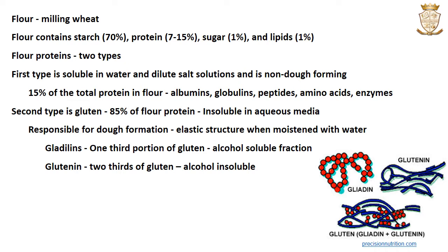The second type of flour protein is gluten, which contributes 85% of flour protein. They are insoluble in aqueous media and are responsible for dough formation. Gluten forms an elastic structure when moistened with water and it holds starch, yeast, gases and other components of dough. One third portion of gluten is the alcohol-soluble fraction, known as gliadins, and the two-thirds portion is non-alcohol-soluble, known as glutenins.